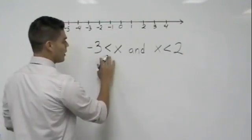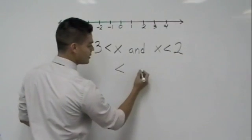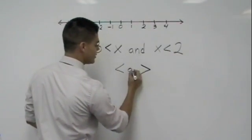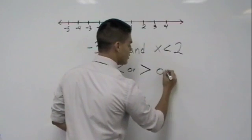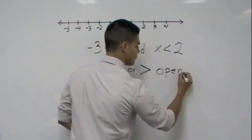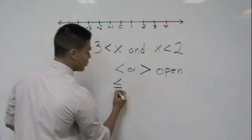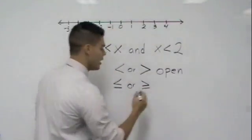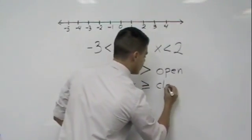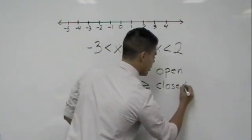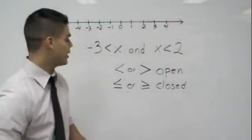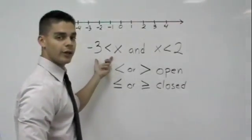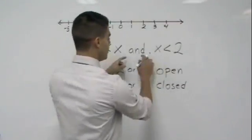And remember, whenever we have just a less than or greater than sign, it's going to be an open circle. Whenever we have the less than or equal to, or the greater than or equal to, it's going to be a closed circle. Very important that we remember this. So let's go ahead and graph each one of our inequalities, and then we'll connect it by our conjunction.